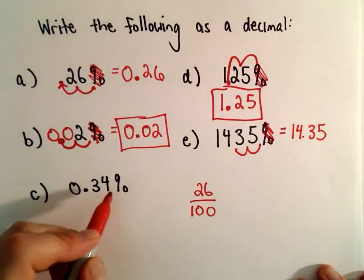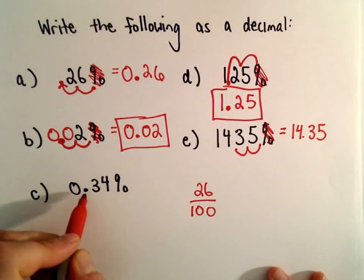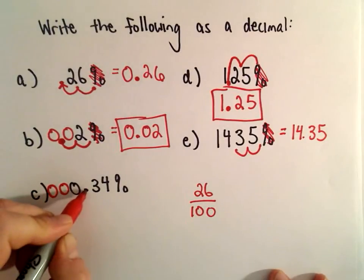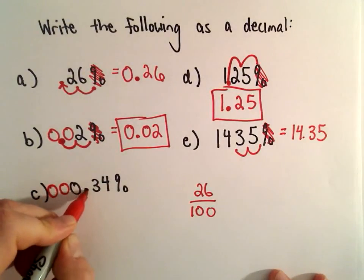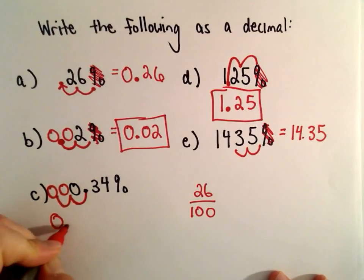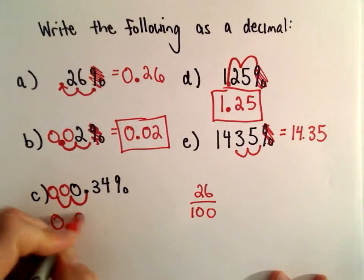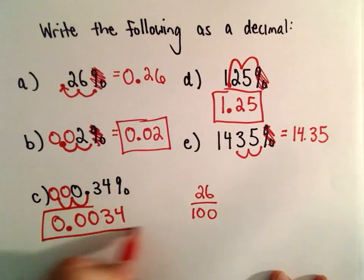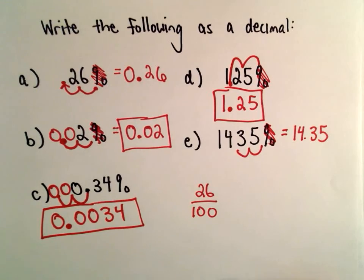And last but not least, if we have 0.34%, same thing, we still have to move it two places to the left. So if we took the decimal place and moved it two places to the left, we would now have 0.00, three, four. That would be the equivalent decimal form.